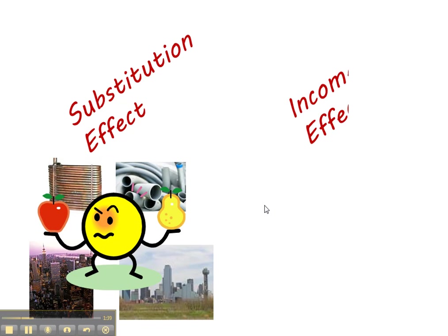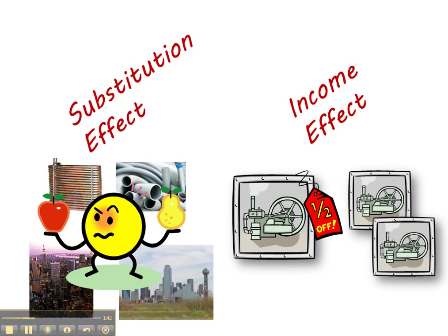Likewise, the income effect comes into play as well. Firms, just like consumers, are assumed to have a static amount of income at any given time. If the price of a machine drops by half, with that static amount of income, firms could buy two machines for what they previously could have purchased for one machine before the price drop. Both of those effects produce a situation where, as price falls, quantity demanded rises — and that's why the demand curve for a resource slopes downward to the right.